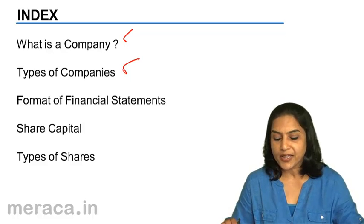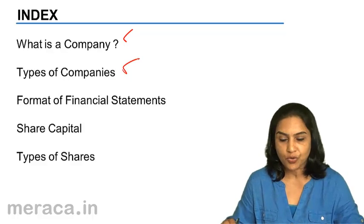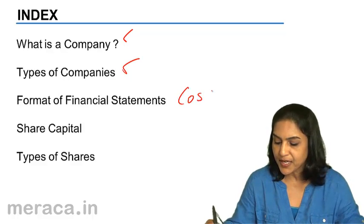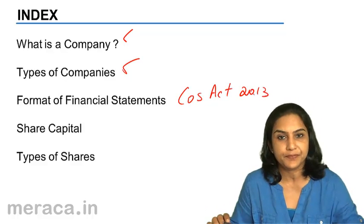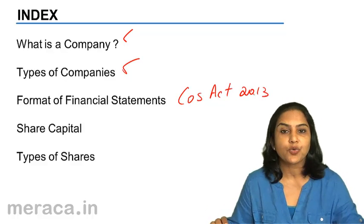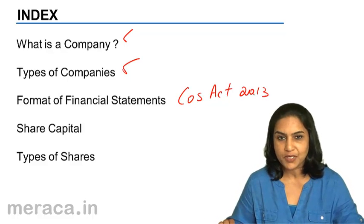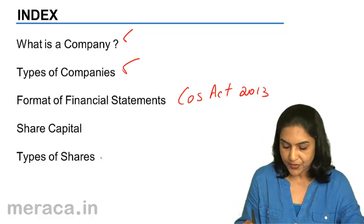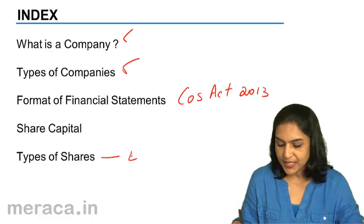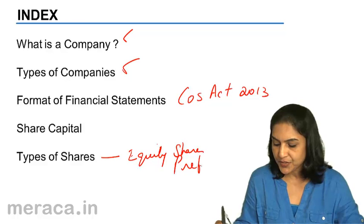We will also look at the format of financial statements. The format we shall look at would be as per the Companies Act 2013. We would then go on to understand how the capital of a company is formed, what is share capital, and what are the kinds of shares. Shares are basically equity shares and preference shares.